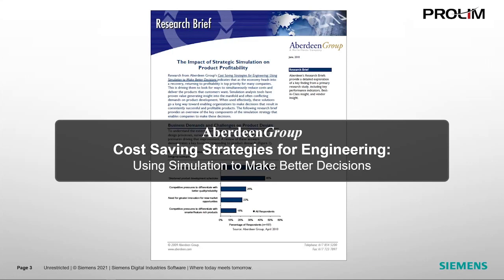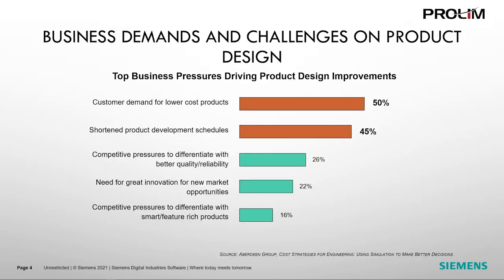Here is research from the Aberdeen Group called 'Cost Saving Strategies for Engineering.' It clearly shows that regardless of the state, profitability remains the top priority for many companies. They are looking for ways to deliver quality products while reducing cost. When armed with the right resources, engineers are empowered to make better decisions and reduce cost. A survey was conducted asking companies to pick the top two pressures driving improvements in the design process.